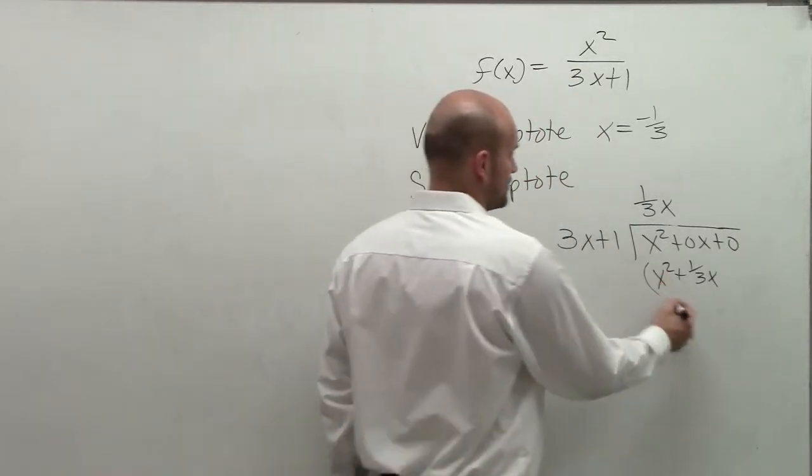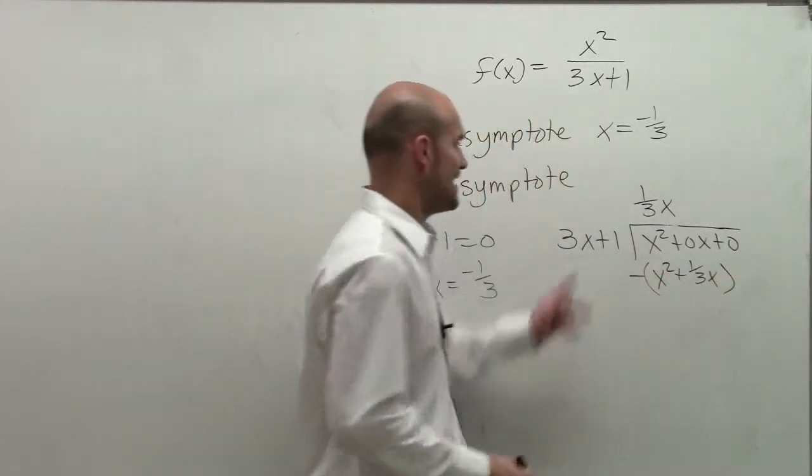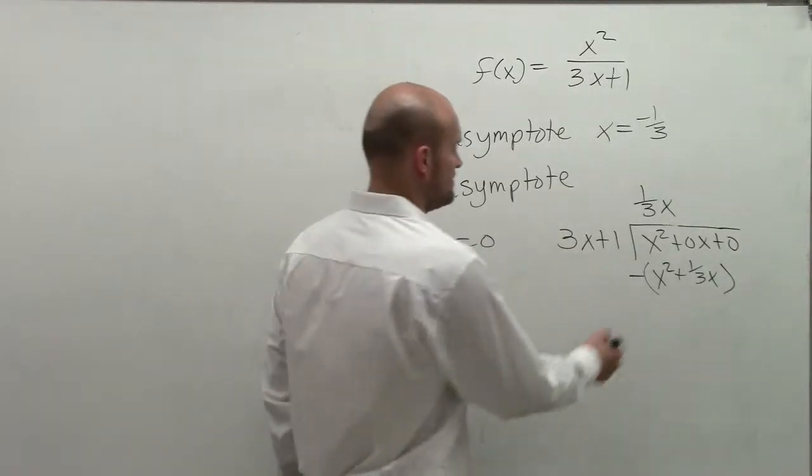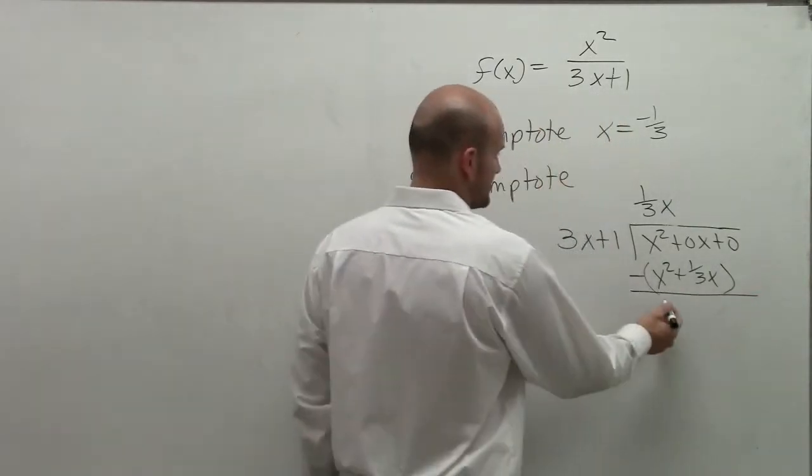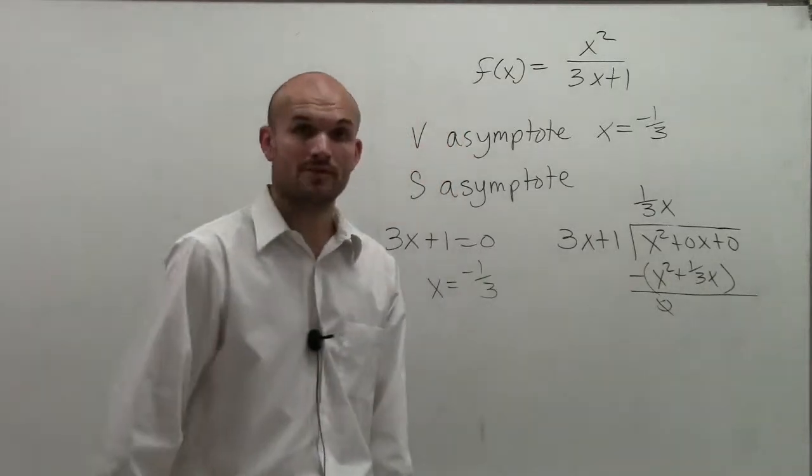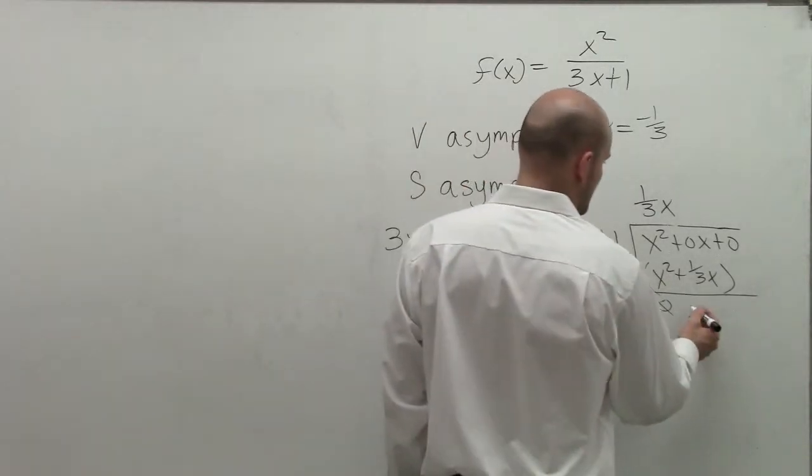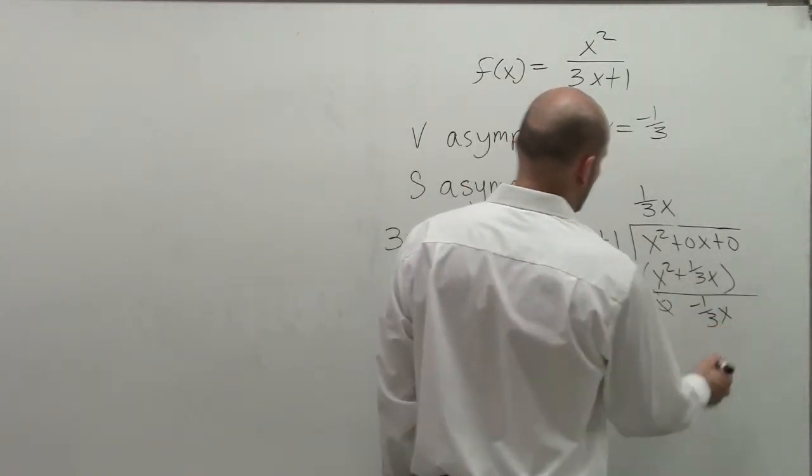Then we subtract our rows. So x squared minus x squared leaves me with zero. And then I have 0 minus 1/3 x, which is negative 1/3 x.